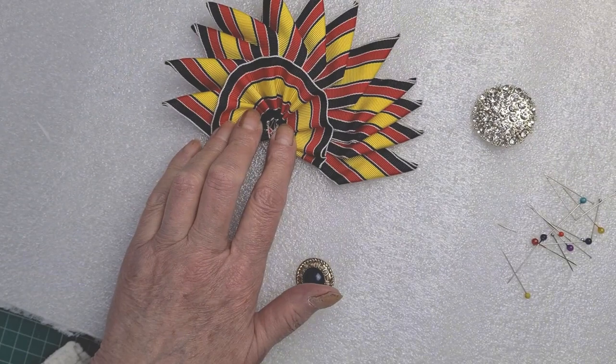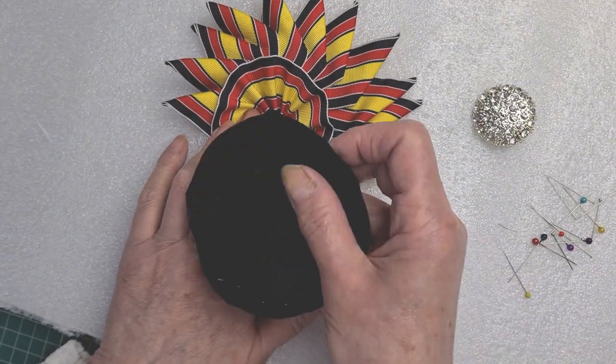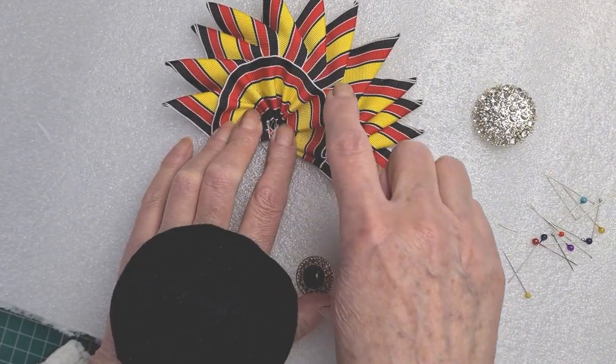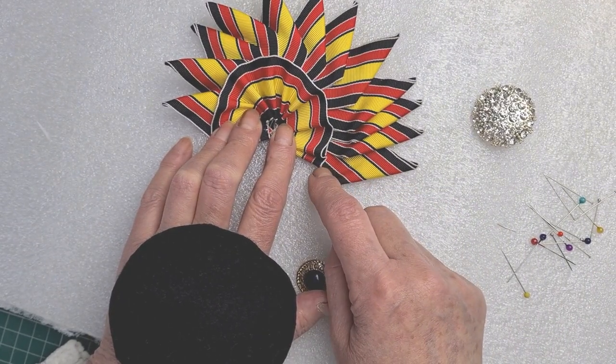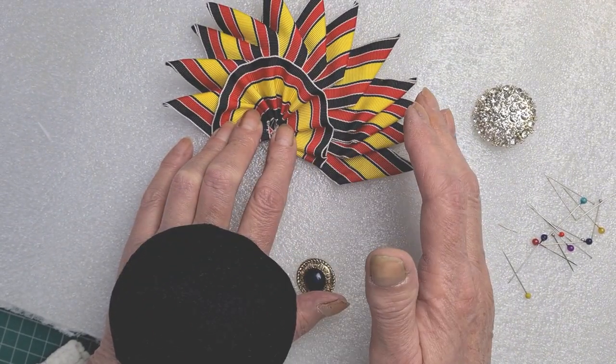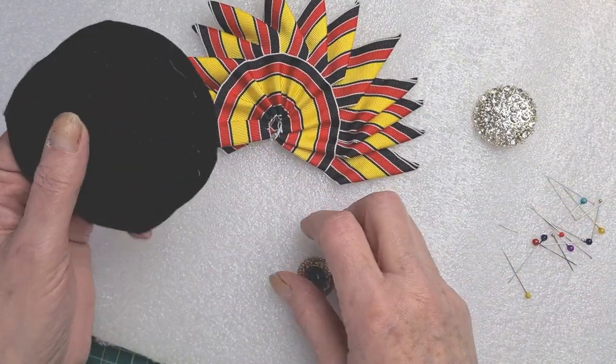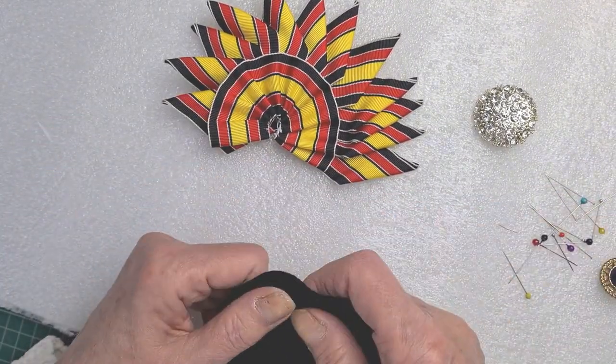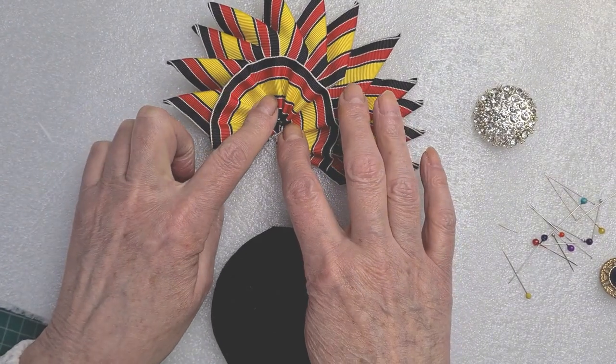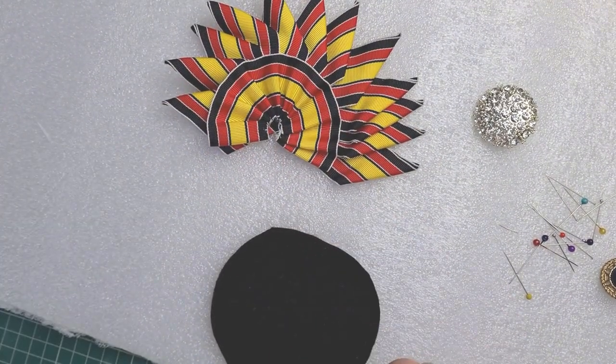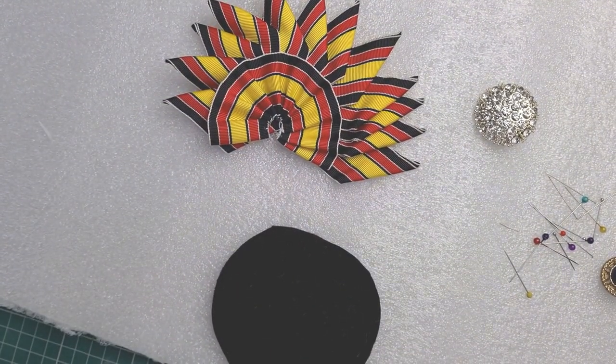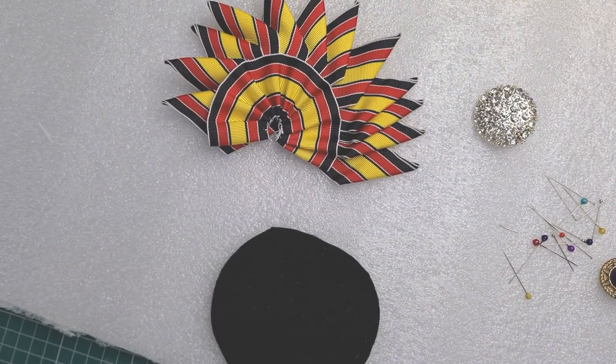Now what I tend to do on the back is I cut some felt to stitch to the back, because it keeps it all together and it makes it easier for then attaching to a hat or something like that. I'm going to stitch this on and then stitch some felt onto the back so that it all stays in place.